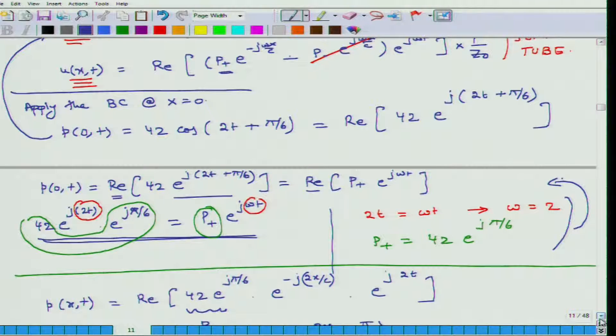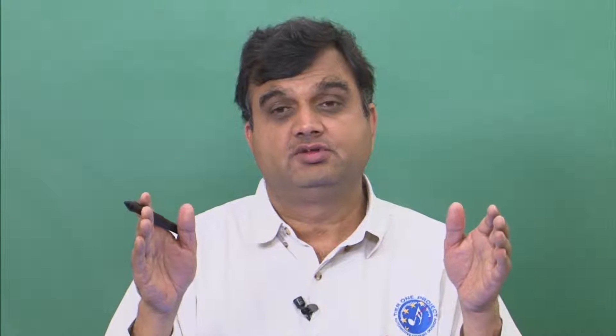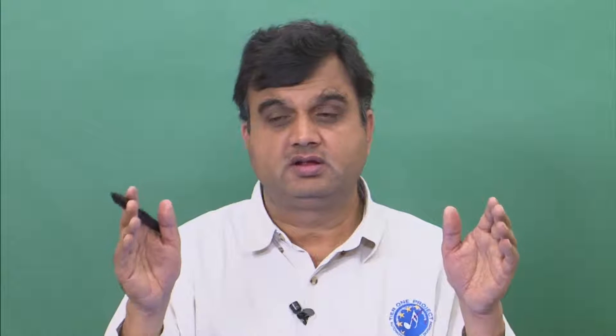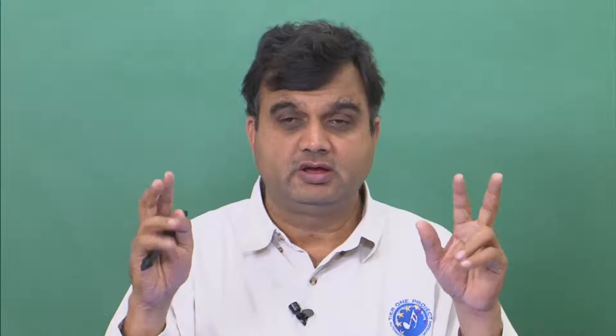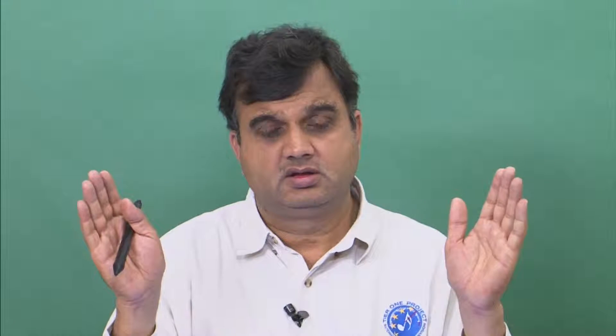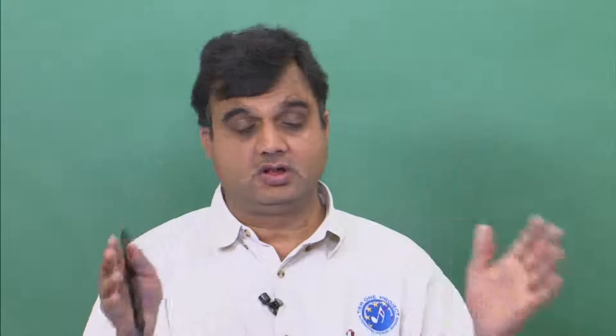To summarize the important characteristics: for a semi-infinite tube, P⁻ (complex amplitude of backward-travelling wave) = 0. For a closed tube, U at the closed end = 0. For an open tube, pressure P at the open end = 0. Applying these three conditions allows us to solve for pressure and velocity in all three tube types.